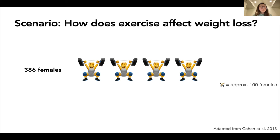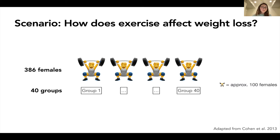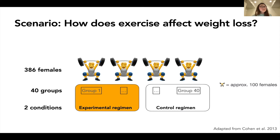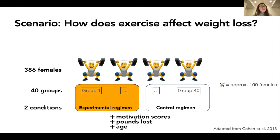They collect data from 386 adults who are part of 40 different exercise groups. They randomly assign each group to one of two conditions: an experimental exercise condition and a control condition. In addition, the researchers collect data about motivation, pounds lost, and their ages.